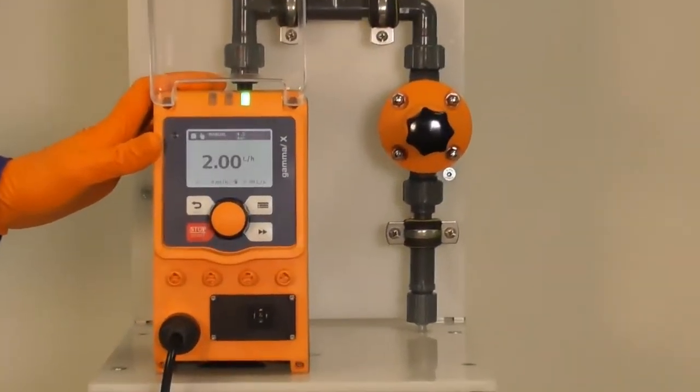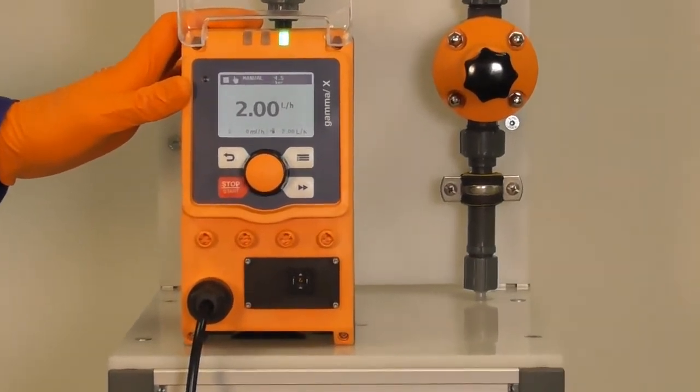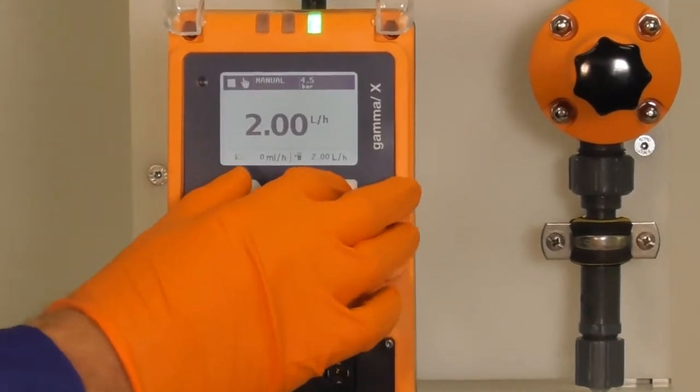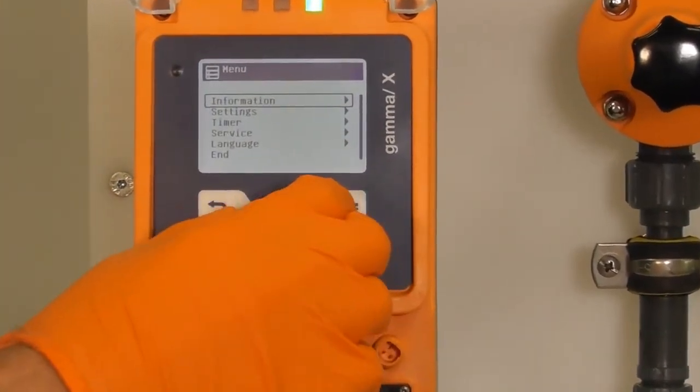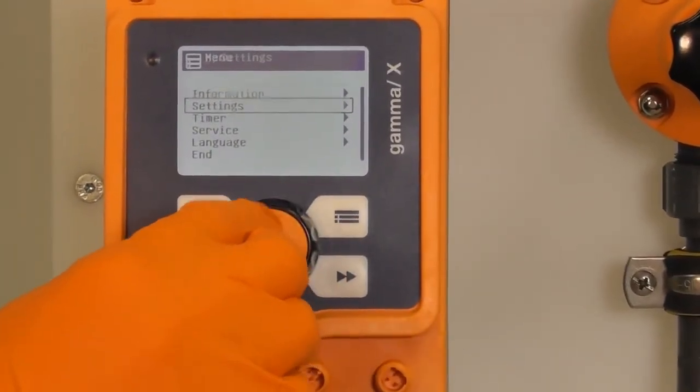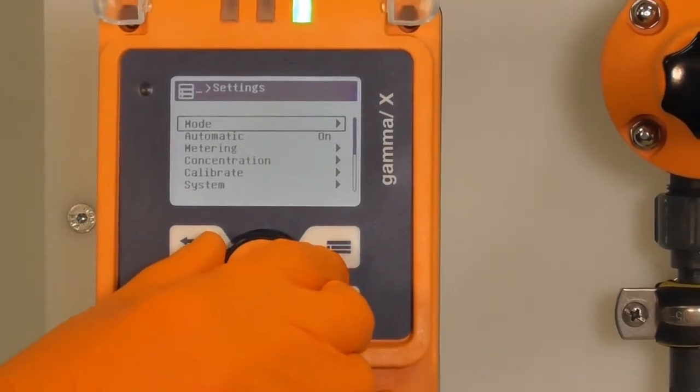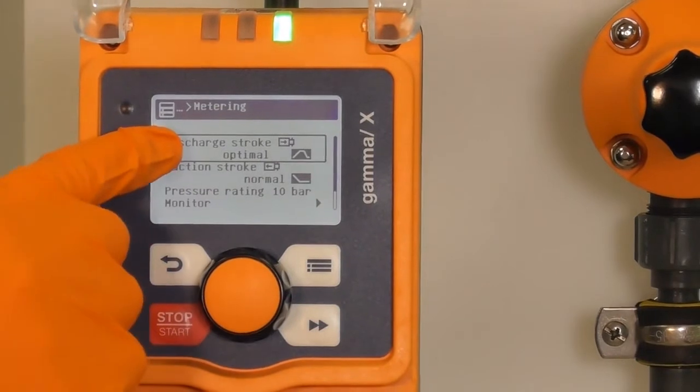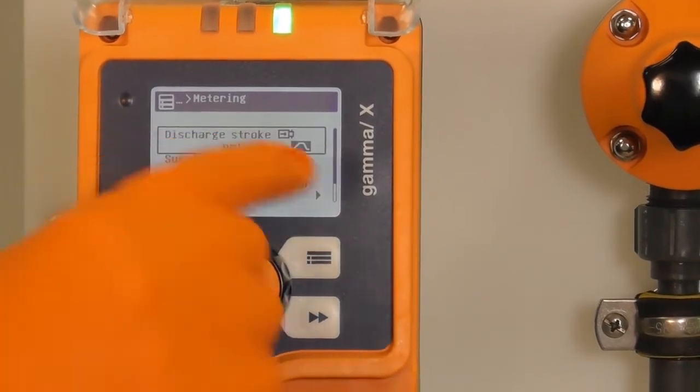Now, I would like to present you the discharge dosing profiles. We have 6 different of these profiles in total. Therefore, we go in the menu, in settings, then we have here metering and here we see the discharge strokes preset is optimal.